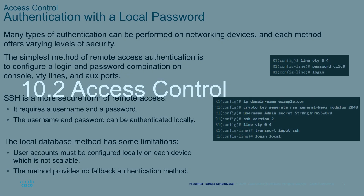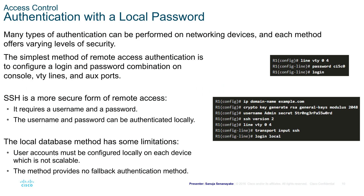Access Control. Authentication with a Local Password. Many types of authentication can be performed on networking devices, each offering varying levels of security. The simplest method of remote access authentication is to configure a login and password combination on console, VTY lines, and aux ports. SSH is a more secure form of remote access compared to Telnet — it requires a username and password which can be authenticated locally. The Local Database method has some limitations, however, because the user accounts must be configured locally on each device, which is not scalable.